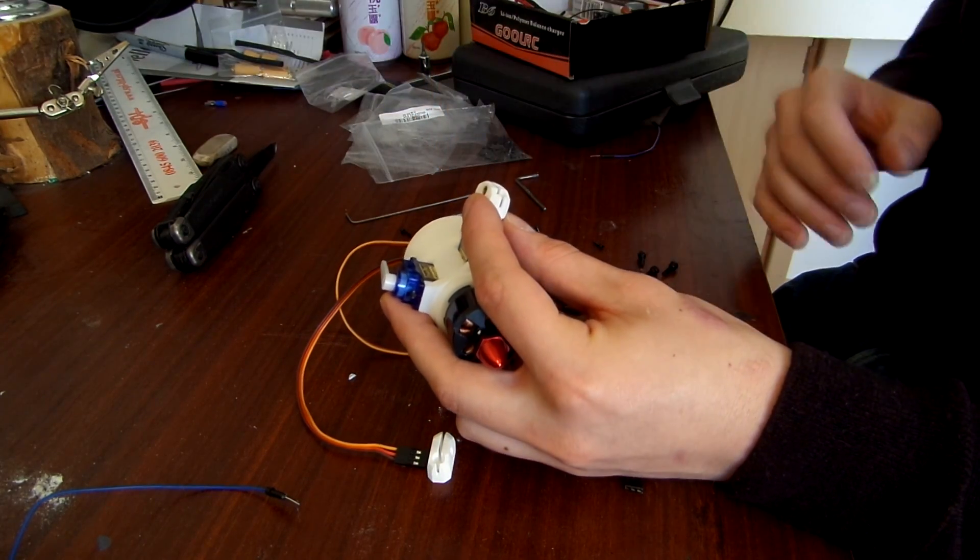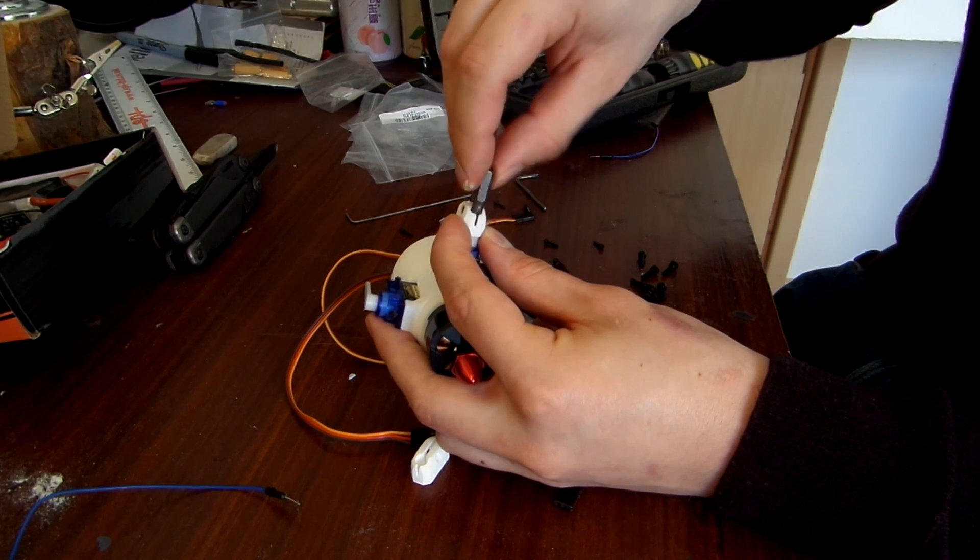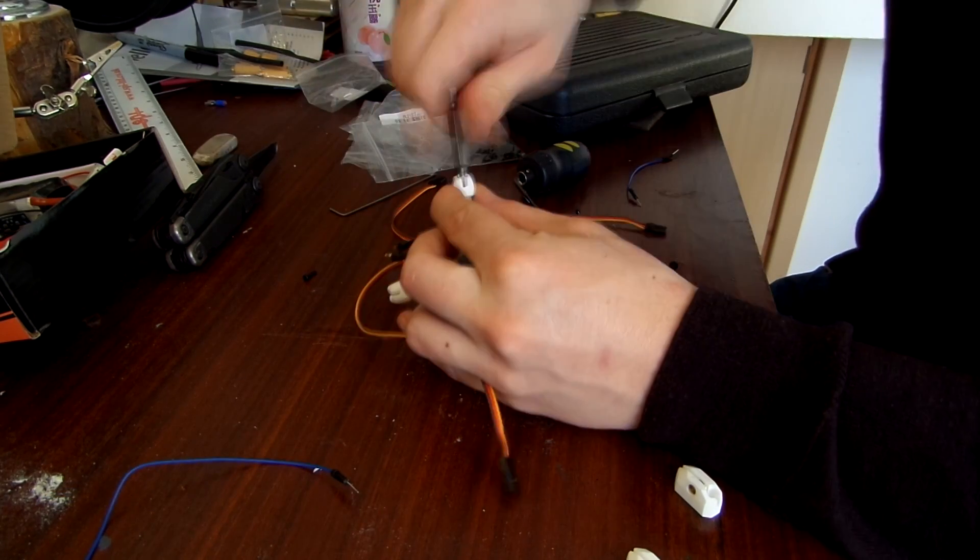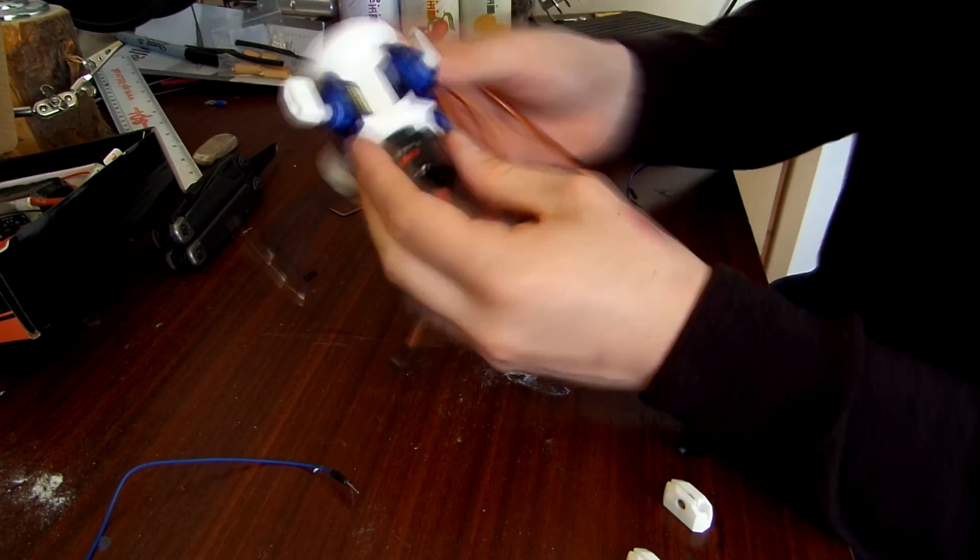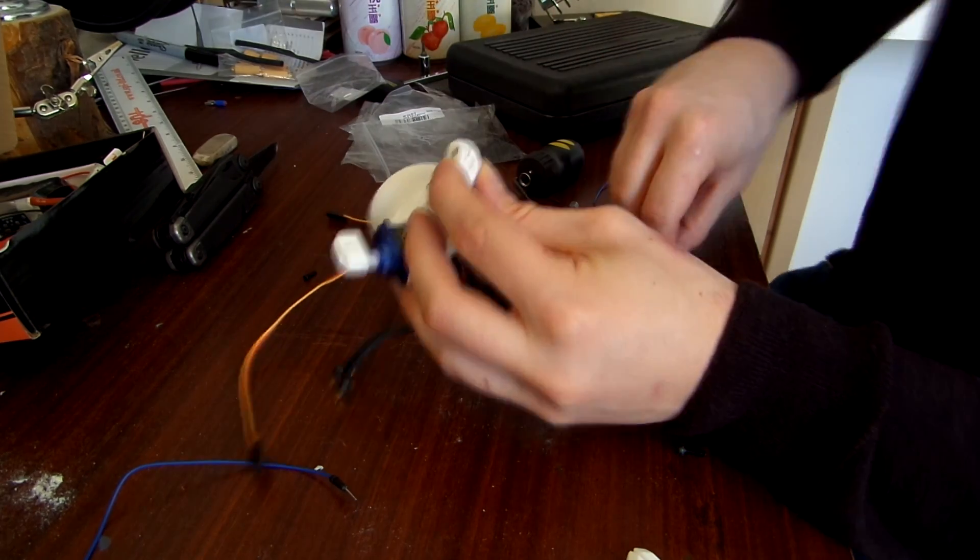So once I was sure that all the servos worked fine I started putting on the little adapters onto the little servo arms. And these were used to attach the air fins directly to the servo and on the other side to the outer sphere. So these are just screwed in directly into the servo.